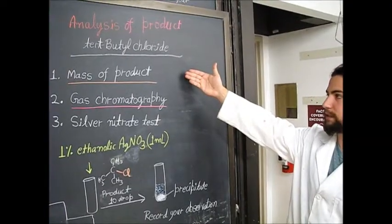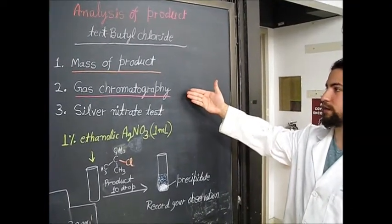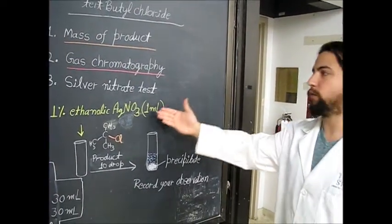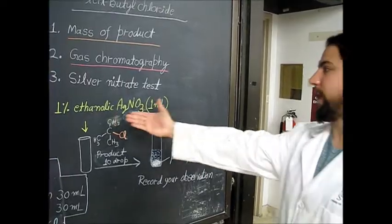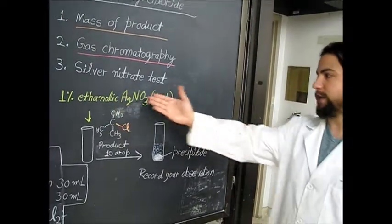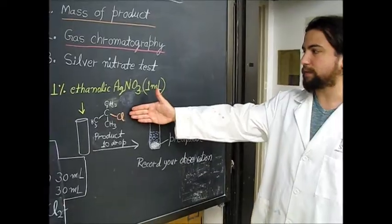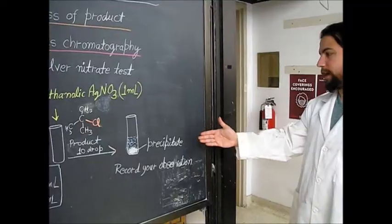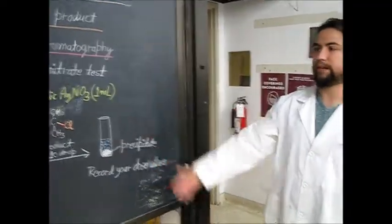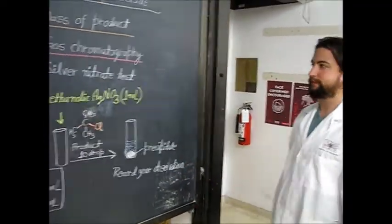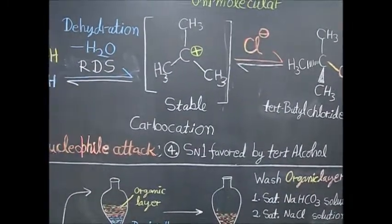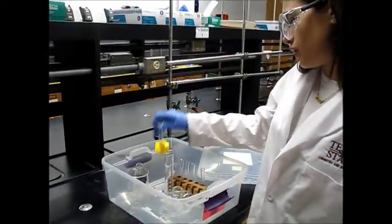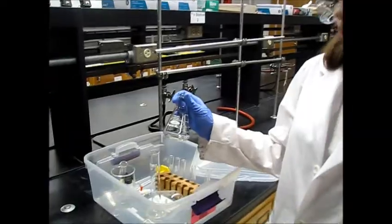First, weigh the mass of your product. Second, perform gas chromatography. Third, perform the silver nitrate test: place one milliliter of ethanolic silver nitrate into a test tube, add 10 drops of your product, and a precipitate will form. Record your observations from this experiment.